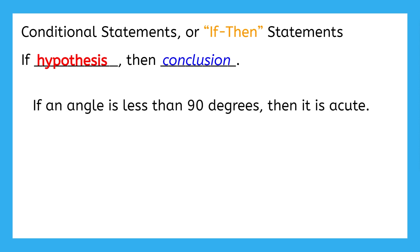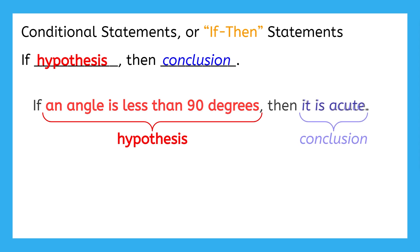Let's take a look at this conditional statement about acute angles. If an angle is less than 90 degrees, then it is acute. The hypothesis in this statement is the phrase, an angle is less than 90 degrees. We know this because it follows the word if. The conclusion would be the phrase, it is acute.